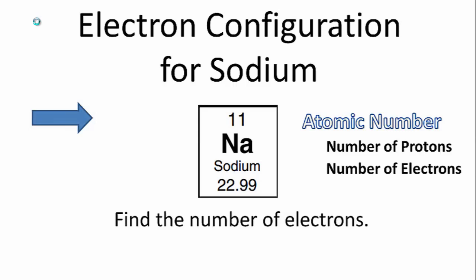To write the electron configuration for sodium, we first have to find the number of electrons around the nucleus of the sodium atom.